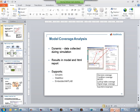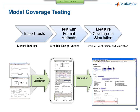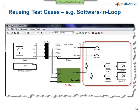To recap: we imported manual test inputs, appended them with auto-generated tests from Simulink Design Verifier using formal methods, then tested for model coverage to find any missing requirements. As Jay mentioned, these test cases can be reused for software-in-the-loop testing to check whether the model and generated code align correctly.